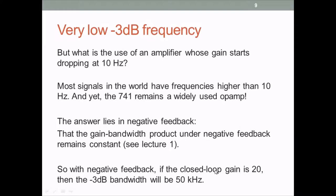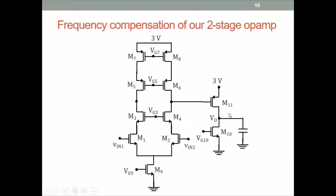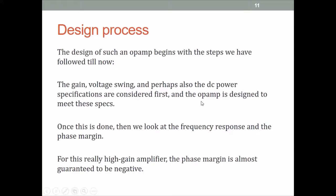Let us now discuss how to compensate a two-stage op-amp. The design begins with steps discussed in previous lectures: design for gain, voltage swing, and DC power specifications, setting widths and gate voltages to meet these specs. Once this is done, we look at the frequency response and the phase margin. Because this is a very high gain amplifier, the phase margin is almost definitely negative, so frequency compensation is required to make it stable and the phase margin positive.